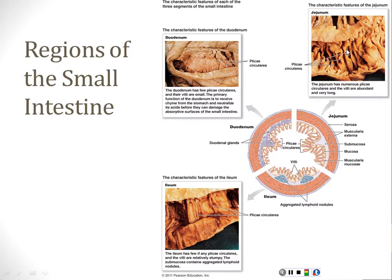This shows the jejunum cut open so you can see inside — you can see these deep folds with no smooth spots. That's the plica circularis of the jejunum, very thick. The mucosa is also very fuzzy — like shag carpet. The duodenum, though, has smooth walls with very little carpet. The ileum is somewhere in between: some folds, but not that thick carpeting or those deep folds of the jejunum.